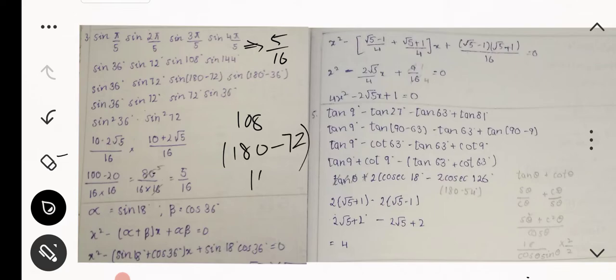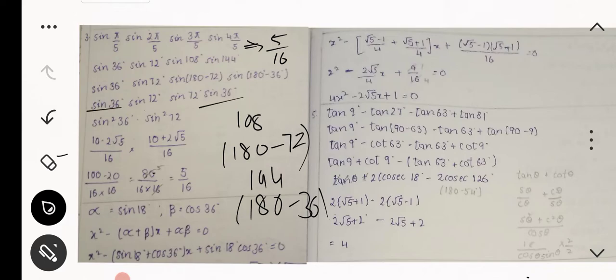Then sin(36°)·sin(72°)·sin(72°)·sin(36°) which gives sin²(36°)·sin²(72°). The value of sin²(36°) is (10 - 2√5)/16 and sin²(72°) is (10 + 2√5)/16. Their product is (100 - 20)/(16 × 16) = 80/256 = 5/16.